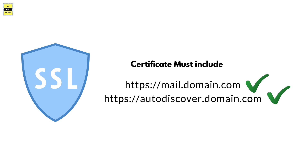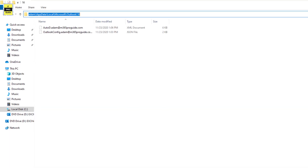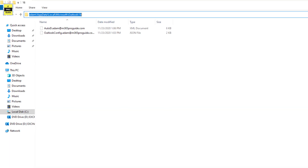The Outlook client will build the Auto Discover URL following your domain.com slash autodiscover.xml for external access. When you prepare an SSL certificate, you must make sure that autodiscover.domain.com is included. In the previous video, we saw how to create an SSL certificate using a wildcard. If you are not using a wildcard certificate, you have to make sure that autodiscover.domain.com is explicitly included in your SSL certificate.